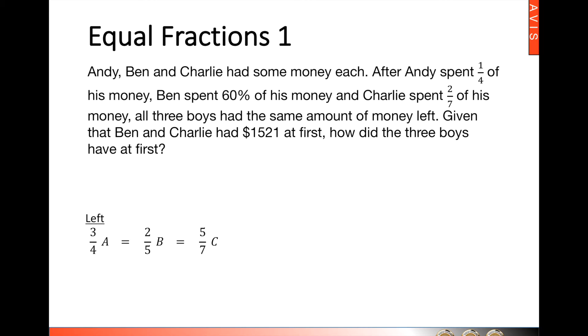Since they have the same amount of money left, if we were to draw models, we will essentially cut the units to make them the same. We make these three units of Andy equal to two units of Ben equal to five units of Charlie. But here there is a much more effective way in doing this. What we need to do is find the lowest common multiple of the numerators. Here we have three, two, and five. And the lowest common multiple of these three numbers is thirty. So let's multiply them by the respective numbers: three times ten, thirty; two times fifteen, thirty; and five times six will give us thirty.